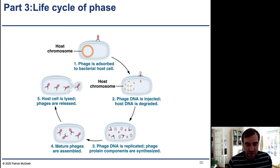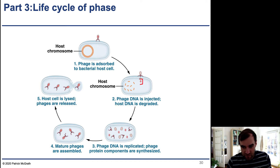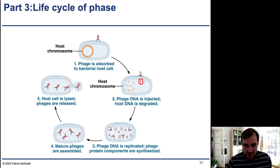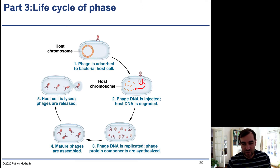The phage is absorbed to the bacterial host cell and injects its piece of DNA. This DNA is used to create RNA, which is used to create proteins. These proteins are able to degrade the host DNA, effectively killing the host by hijacking its ribosomes and polymerases to produce the materials the virus needs.